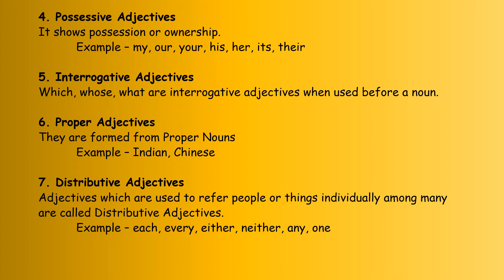The seventh one is distributive adjectives. These are adjectives used to refer to people or things individually among many. So when you want to indicate something individually in a group, that is distributive. Examples are: each, every, either, neither, any, one, all.